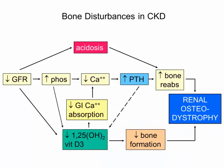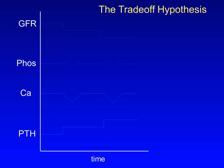First, we'll go over the way that bone disease develops in patients with CKD. Eventually, we'll work our way through this complicated diagram, but for now, I'll start by describing a hypothesis developed in the 1950s by investigators at Washington University in St. Louis to explain abnormal labs that they observed in their CKD patients. Their so-called trade-off hypothesis goes like this.